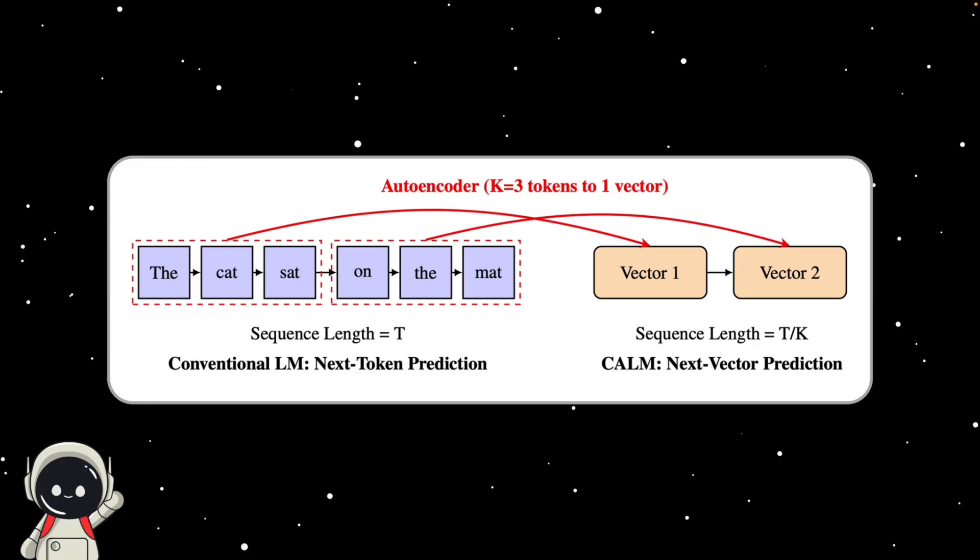Then, instead of predicting word by word, the model predicts that single signal, that vector. It's like upgrading from dial-up to fiber internet for AI languages. Each step carries way more meaning, which means the model can think and write faster, using less compute power. The researchers call this increasing the semantic bandwidth, basically packing more meaning into each prediction.